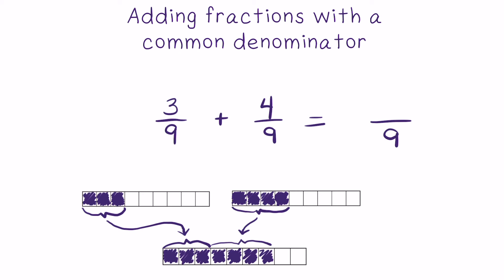As you can see, when you add the 3 ninths and the 4 ninths together into a whole that has been broken up into 9 equal parts, the sum of those two fractions equals 7 ninths. Anytime you are adding two fractions with a common denominator, you can simply add the two numerators together to find your numerator in the sum, and then carry that common denominator to the fraction in the sum. 3 ninths plus 4 ninths equals 7 ninths.